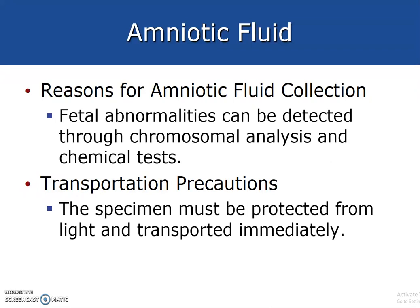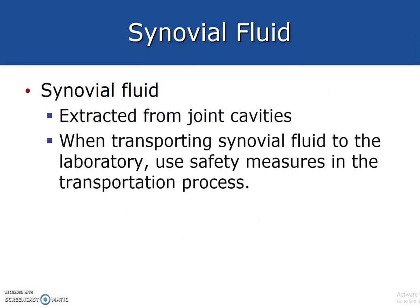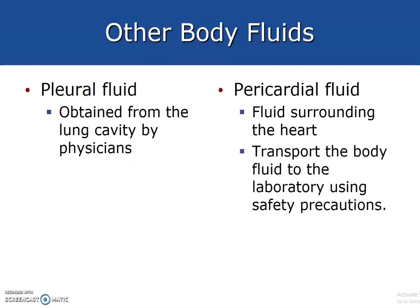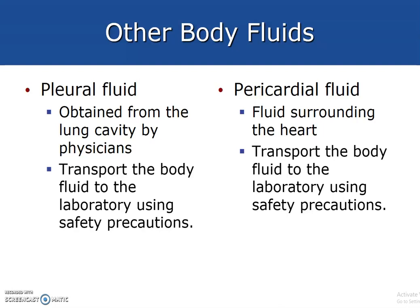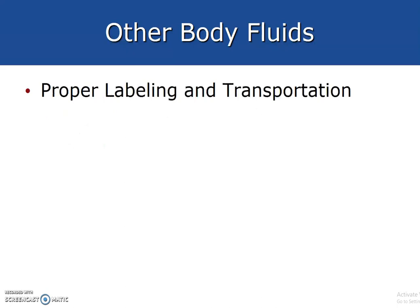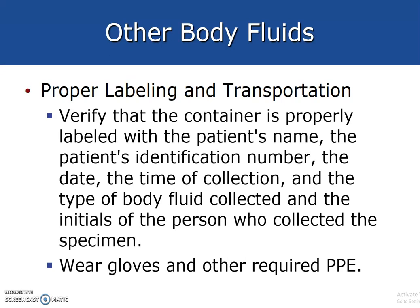Amniotic fluid is collected to detect fetal abnormalities through chromosomal analysis and chemical tests; the specimen must be protected from light and transported immediately. Synovial fluid is extracted from joint cavities and must be transported using safety precautions. Other bodily fluids include pleural fluid from the lung cavities, pericardial fluid surrounding the heart, and peritoneal fluid aspirated from the abdominal cavity. Because many of these fluids appear clear, it is essential to label where the specimen was obtained and what it is.